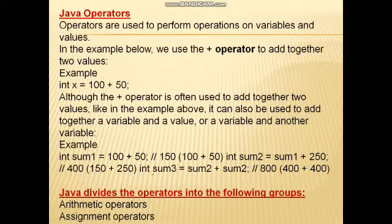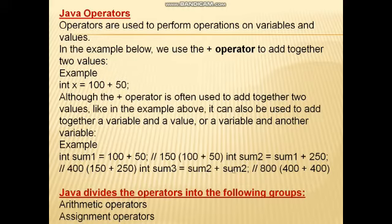Now int sum3 is the third variable. sum1 is the first variable and sum2 is the second variable. sum2 means 400 plus 400 became 800. This is a variable and this is also a variable.